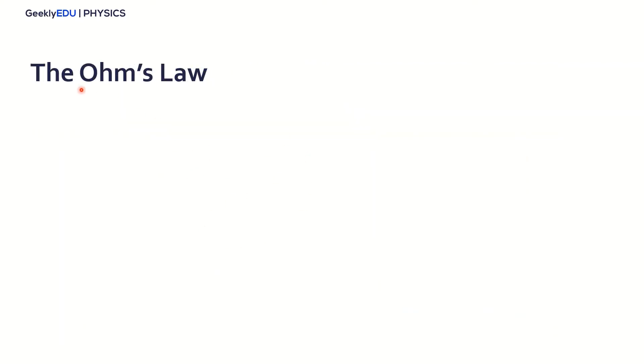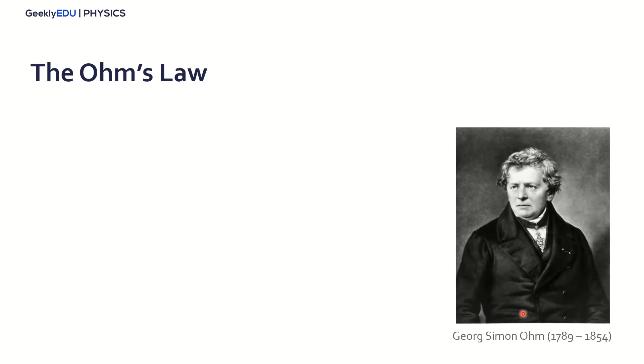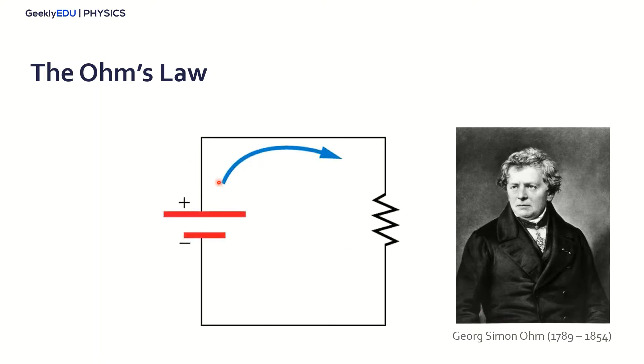Alright, so Ohm's Law, this name here was given after this guy here, Georg Simon Ohm, and he did some experiments with a simple circuit where he would vary the voltage, the resistance, leaving some of those things constant. And he discovered that the current is directly proportional to the voltage applied to it. So in the same circuit with the same resistance, when he varied the voltage, he saw that the current was changing also.